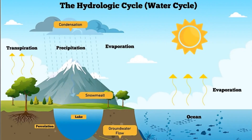You learnt in your previous lesson that heat of the sun causes the water cycle. So we can say that the sun is the main source of light and heat energy. There is life on the earth because of the sun.